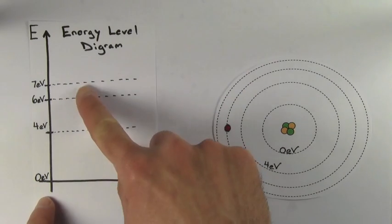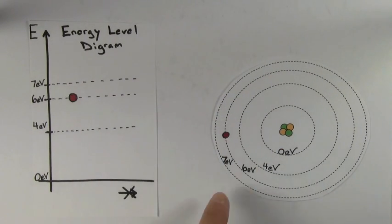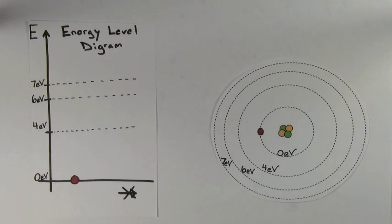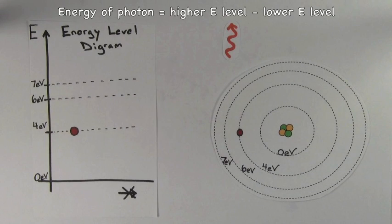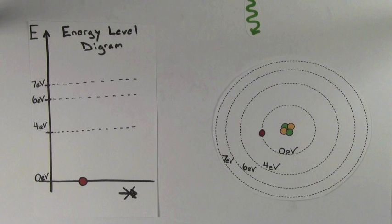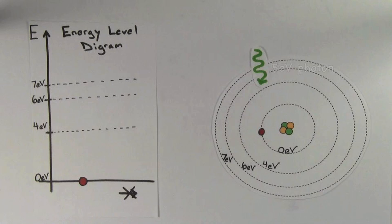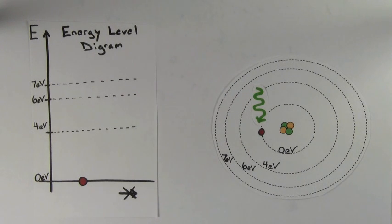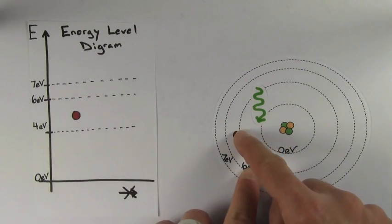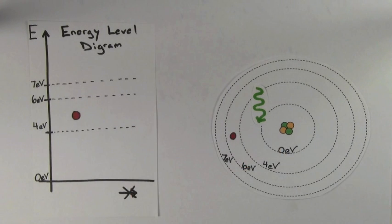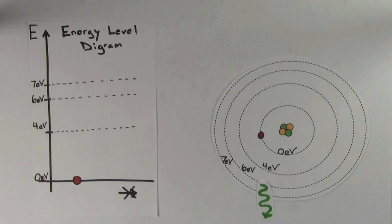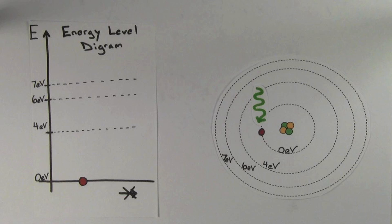So electrons will sometimes drop multiple energy levels at a time, and sometimes they'll take individual steps. Regardless, the energy of the photon is always equal to the difference in electron energy levels. What if our electron is in the ground state and we send a 5 eV photon at it? If the electron were to absorb all of the energy of the 5 eV photon, it would now have 5 electron volts — but that's not an allowed energy level, so the electron can't absorb this photon and the photon will pass straight through the atom. The electron has to absorb all of the photon's energy or none of it.